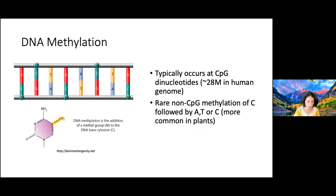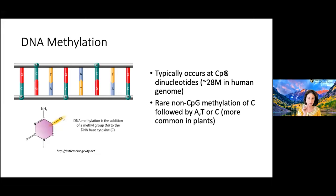The focus of today is DNA methylation. Here's a zoomed-in version: a double-stranded DNA with cytosines in green, and an 'M' for the methyl group that's added. In humans, there are over 28 million of these cytosines followed by guanine — so CpGs. That's the canonical cytosine methylation: a C followed by a G, where the P stands for the phosphate bond. There are other more rare occurrences of non-CpG methylation — a C followed by A, T, or C — less common in mammalian genomes but more common in plants.